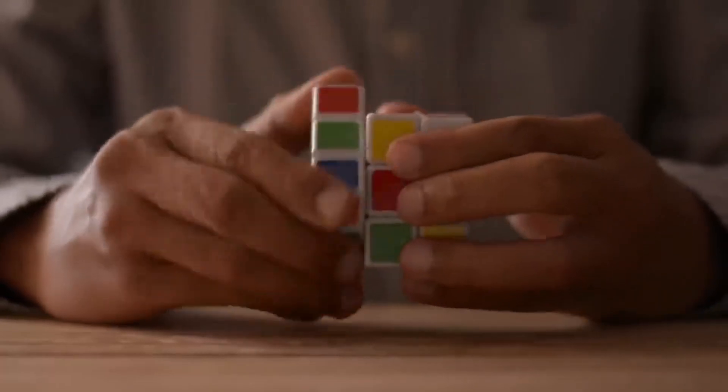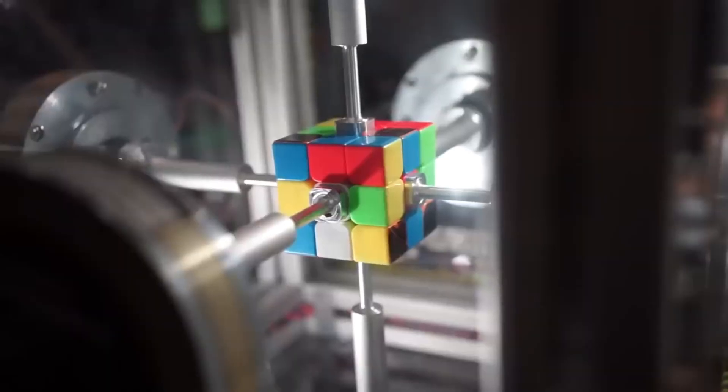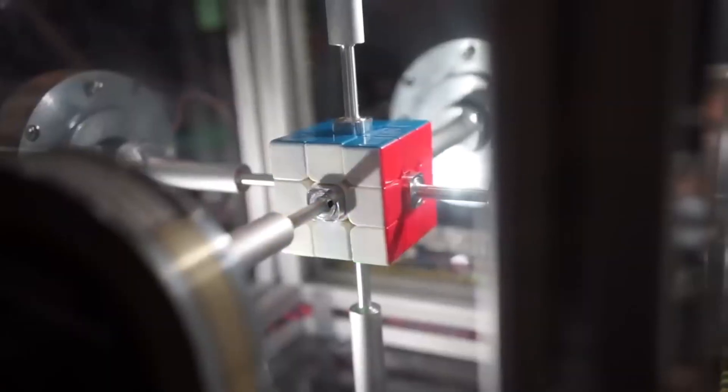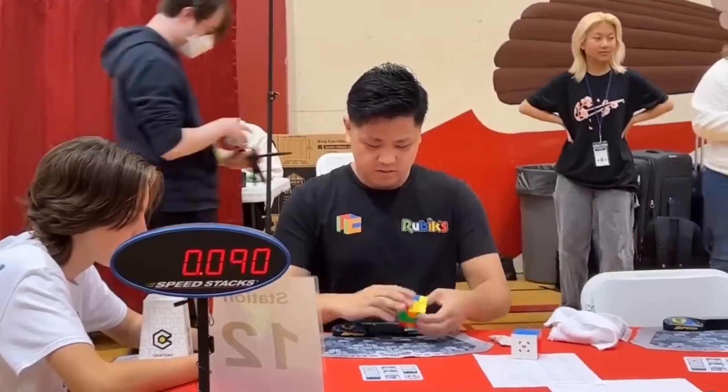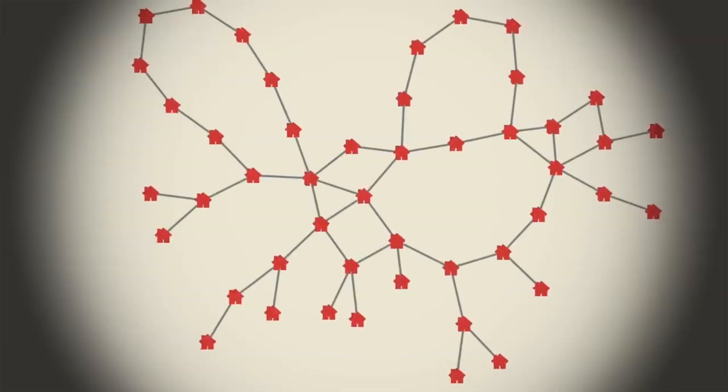But its apparent simplicity hides an incredible number of possible combinations that are more than 43 trillion. This astronomical figure illustrates the depth of the challenge amateurs face in trying to solve the cube in its original form.